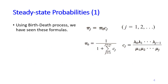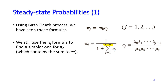We have seen this formula in the birth and death video — the formula to calculate π_j and π_0. π_j is the probability of having j people in the system, so π_0 means the probability of having zero customers in the system. This formula is a bit complicated because we need to do the summation up to j equals infinity, so here we are going to find a simpler way to calculate π_0 for the M/M/1 system.